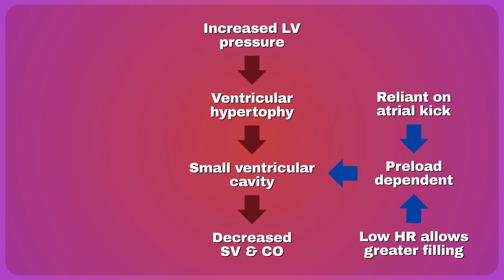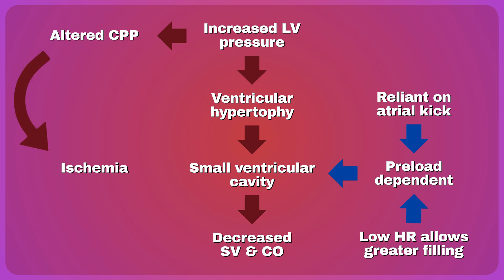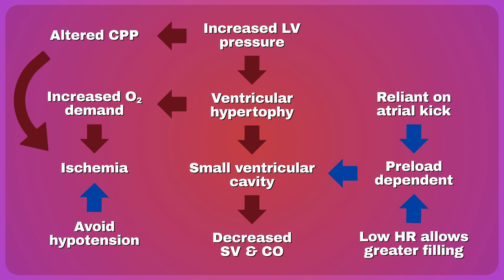High afterload from the stenotic valve also creates a dysregulated pressure gradient in the coronary arteries. When ventricular pressures are high and systemic pressure is low, you start to get decreased perfusion to the heart. That thicker hypertrophied heart muscle requires more blood than normal but is unfortunately receiving less — a greater demand with decreased supply is a recipe for physiologic disaster. To maintain adequate coronary perfusion, you often need to keep systemic blood pressure slightly higher. So for patients with aortic stenosis: hypotension — bad, hypovolemia — bad, AFib — bad, tachycardia — bad.